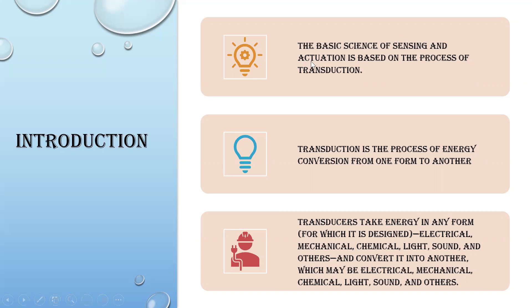This basic science of sensing and actuation is based on one process known as transduction. What is transduction? Transduction is the process of converting one form of energy into another — electrical energy can be converted into mechanical energy, and mechanical energy can be converted into electrical energy. Any form of energy can be converted to any form of energy. That process is known as transduction.